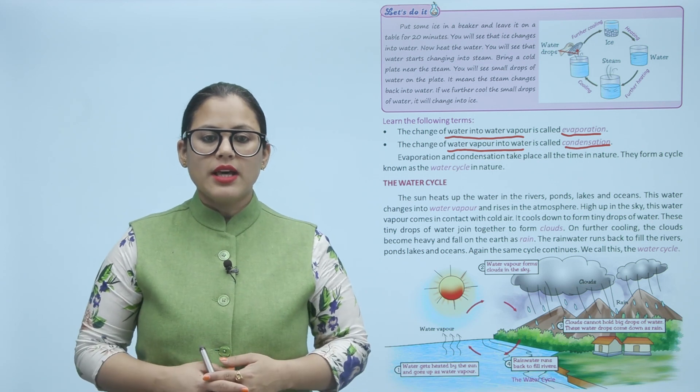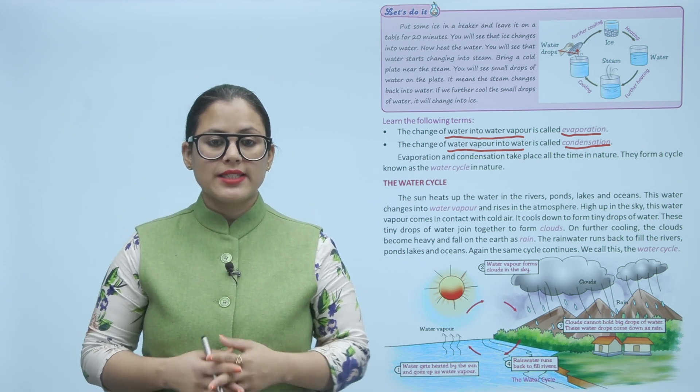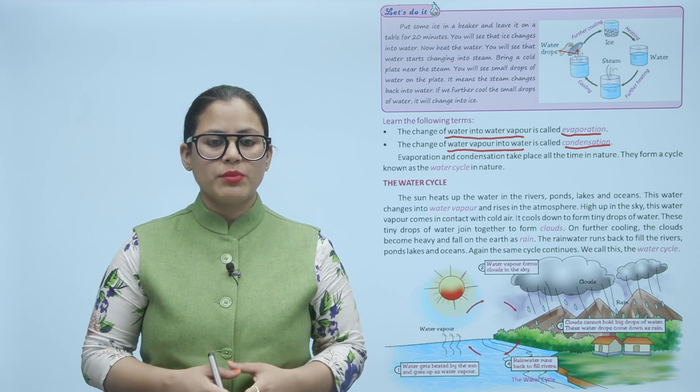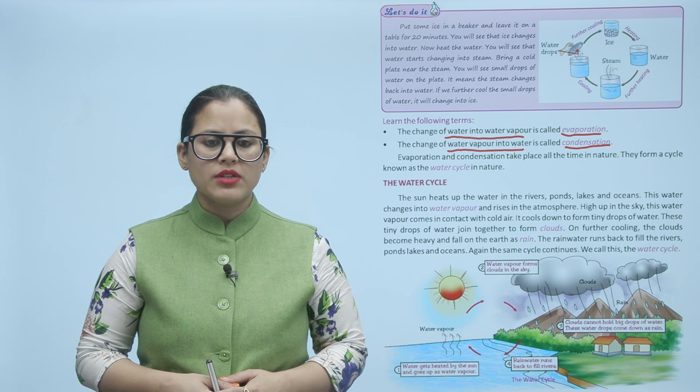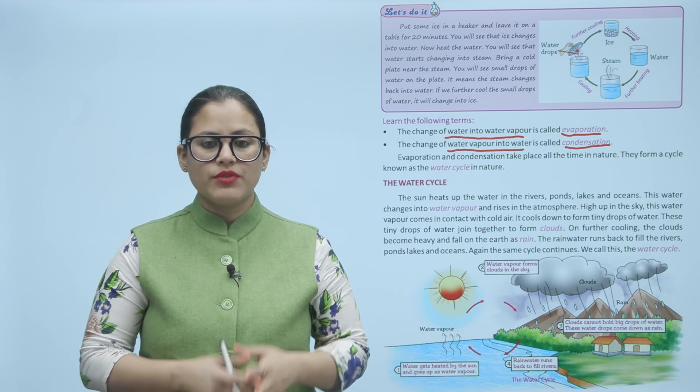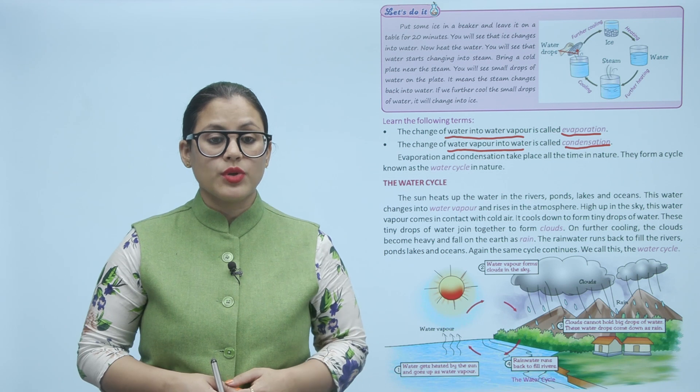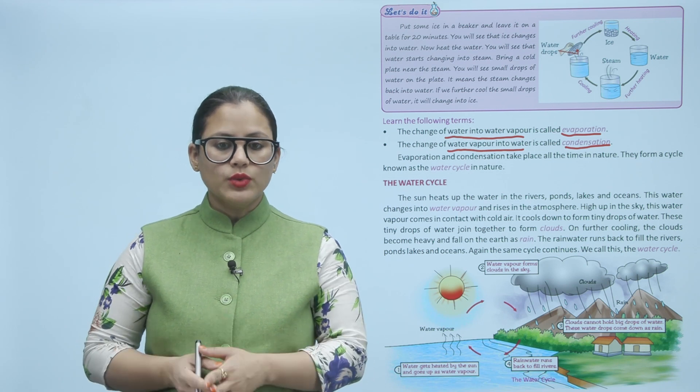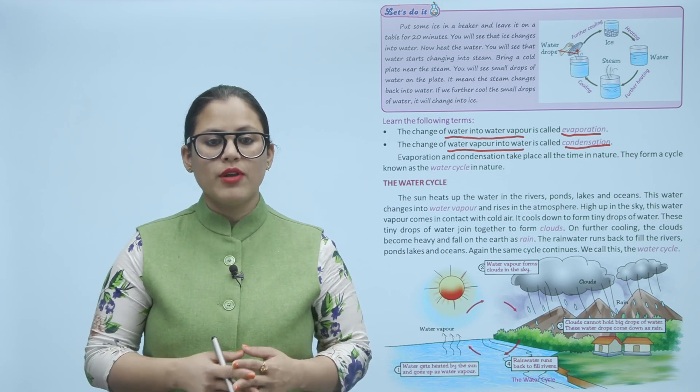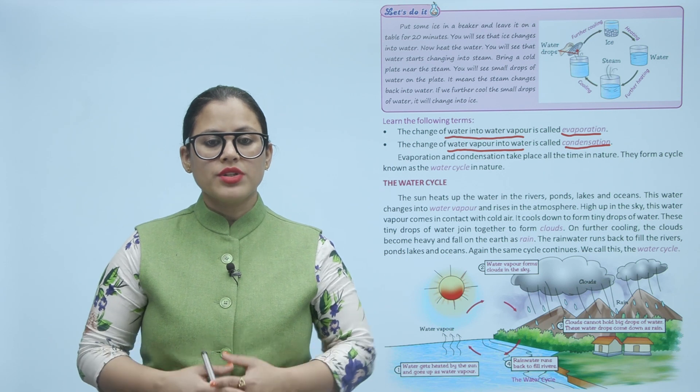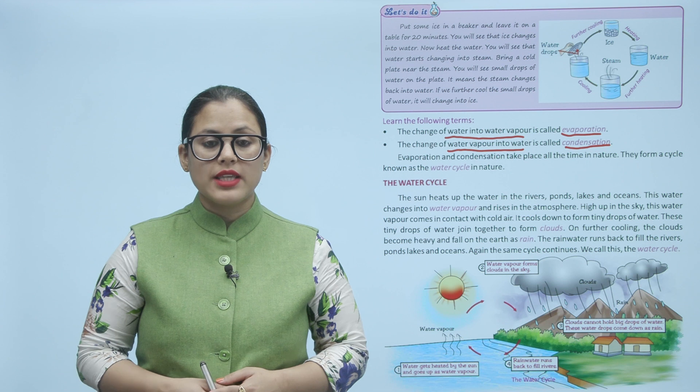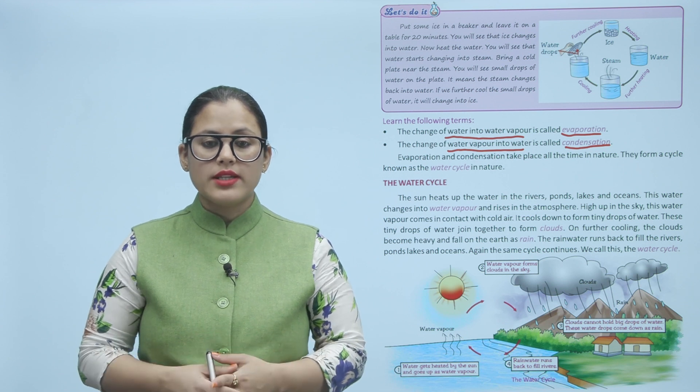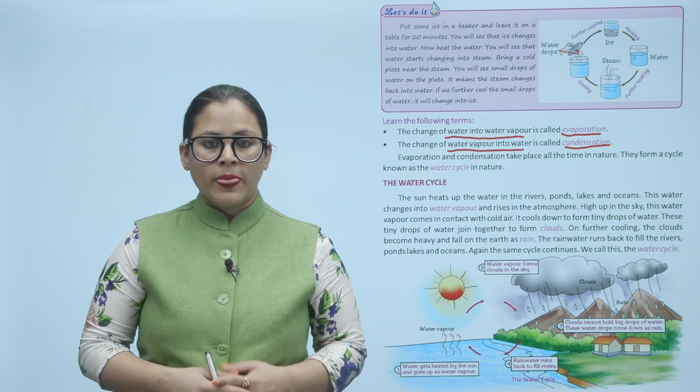Water cycle: The sun heats up the water in the rivers, ponds, lakes and oceans. Thus, water changes into water vapor and rises in the atmosphere. High up in the sky, this water vapor comes in contact with cold air. It cools down to form tiny drops of water. These tiny drops of water join together to form clouds. On further cooling, the clouds become heavy and fall on the earth as rain. The rain water runs back to fill the rivers, ponds, lakes and oceans. Again, the same cycle continues. We call this the water cycle.